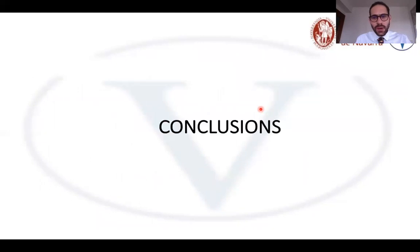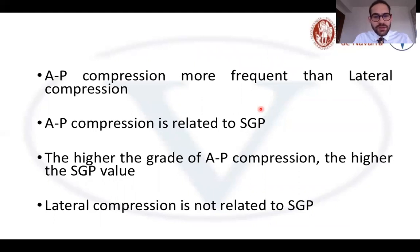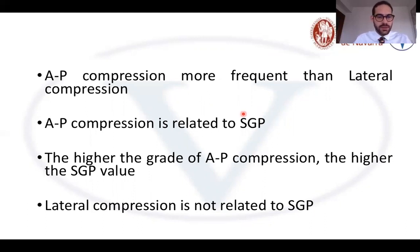The conclusions from this study are: first, AP compression is more frequent than lateral compression in patients with MTD. Second, AP compression is related to subglottic pressure value — the higher the grade of AP compression, the higher the subglottic pressure value. Third, lateral compression is not related to subglottic pressure.